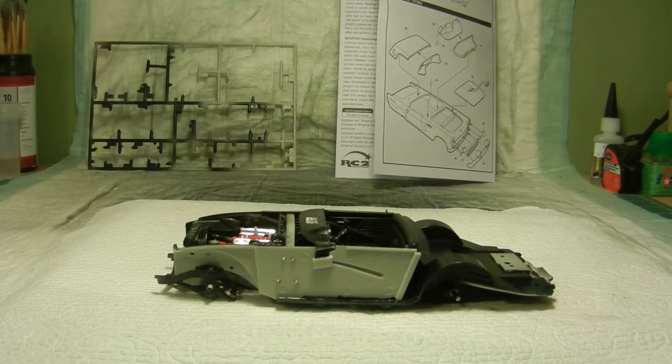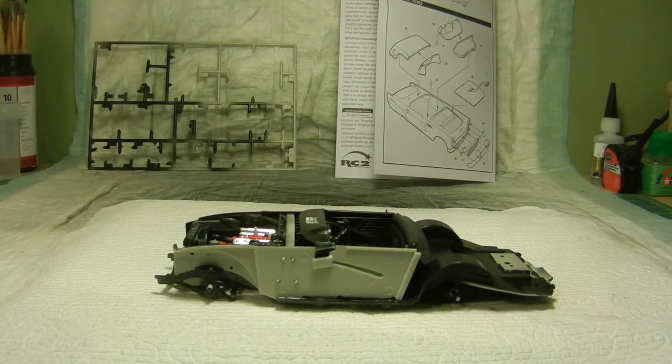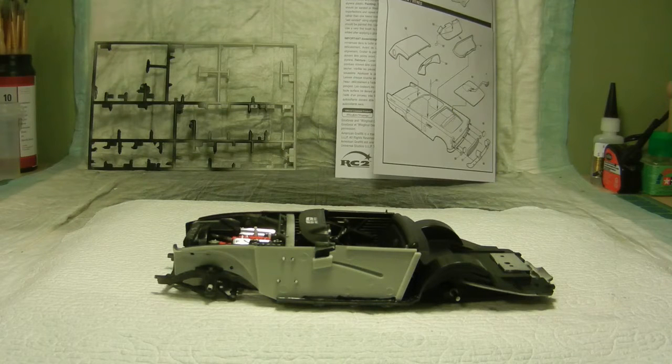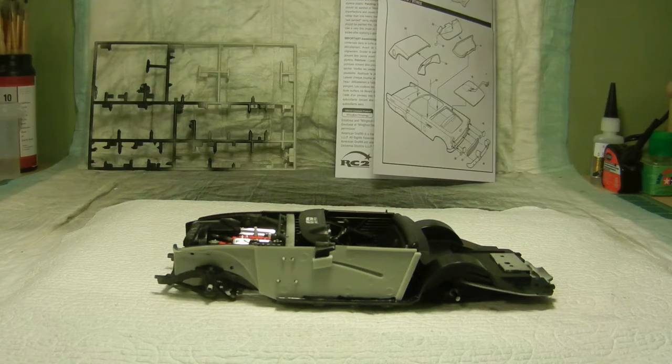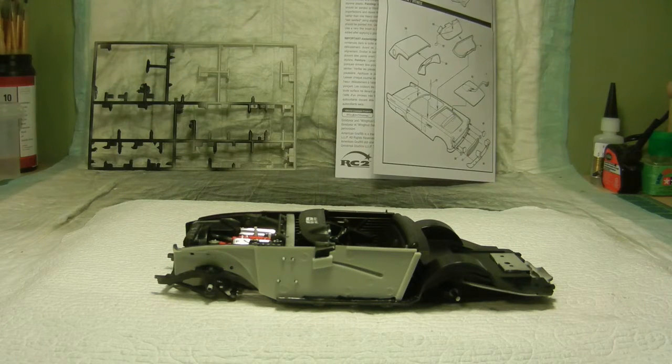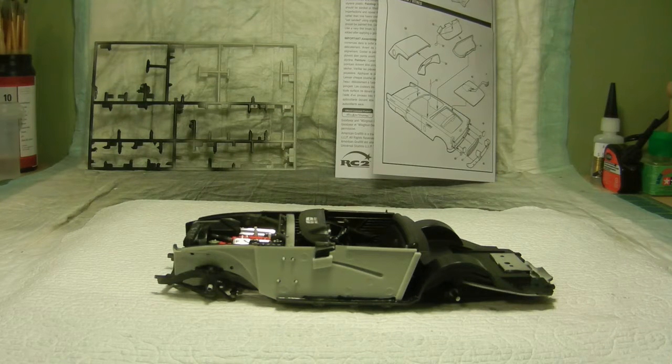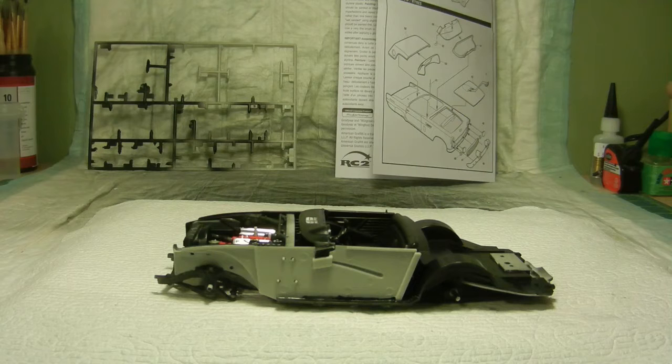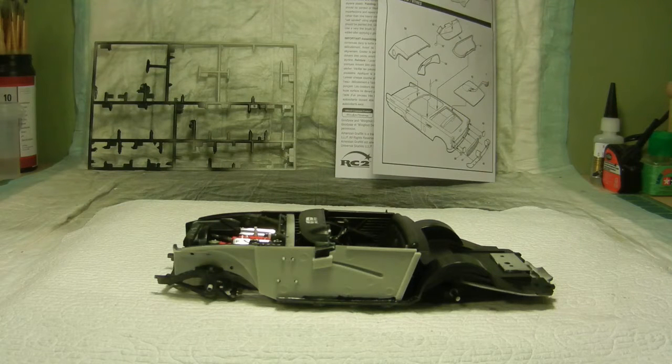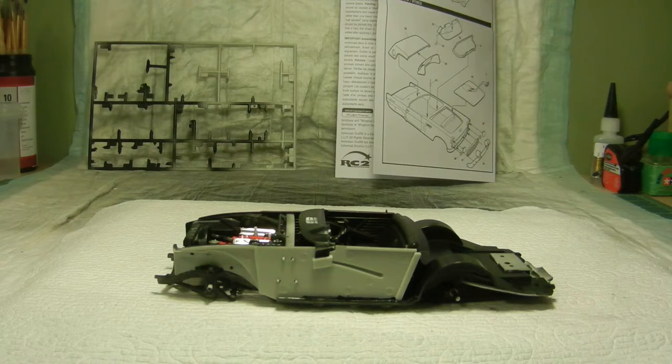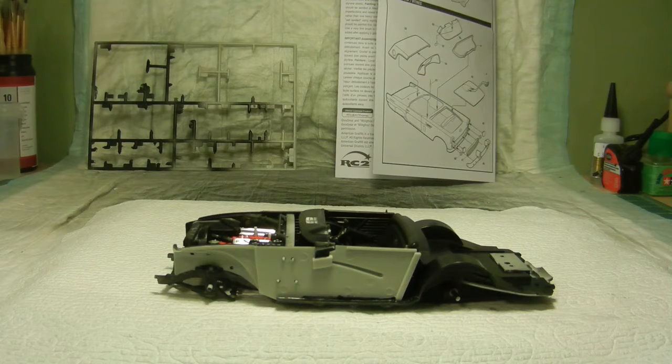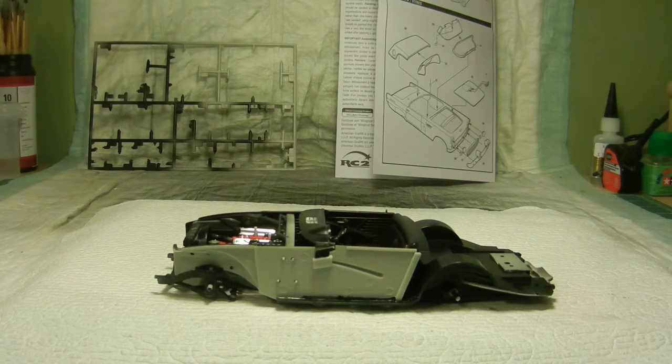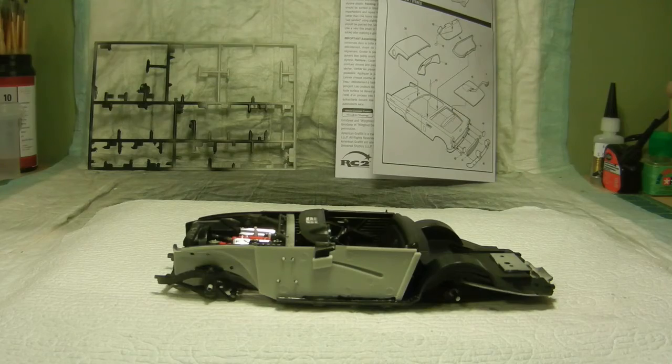Hello again everyone and welcome back to the build for American Graffiti's 1956 Ford Thunderbird I've been working on. As you can see, I pretty much have the whole interior part of the car assembled, so my next step will be working on the exterior parts of the body.